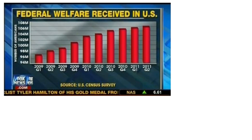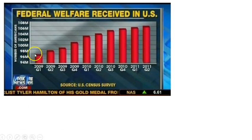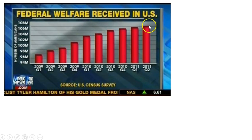The first group of graphs I'm going to show you from several different news sites have the same offense. They get rid of the zero on the vertical axis. When you get rid of zero on the vertical axis, what you do is you make the data look more extreme than what it really is. This one here looks like it doubles, then by the end it triples, when really it's going from 97 to 107.